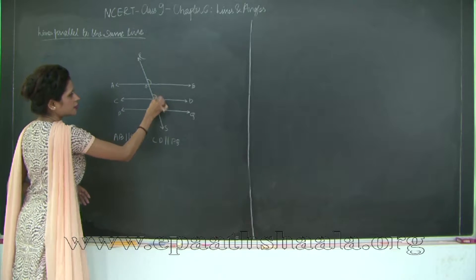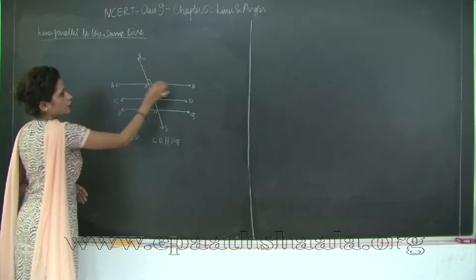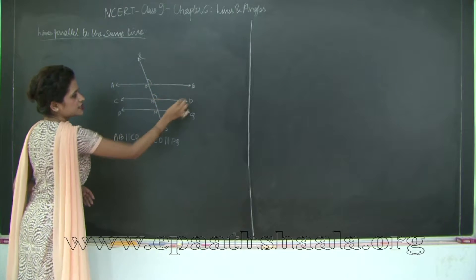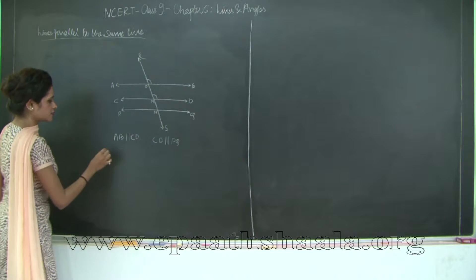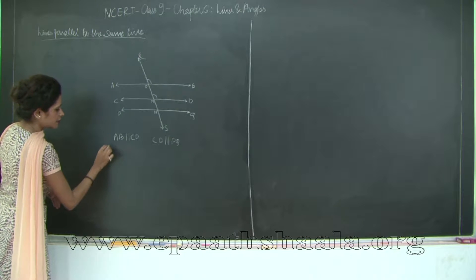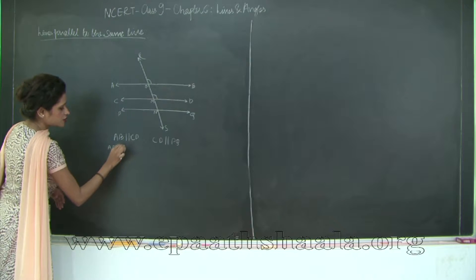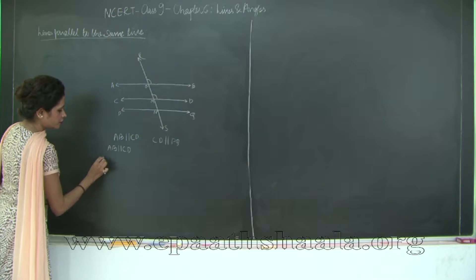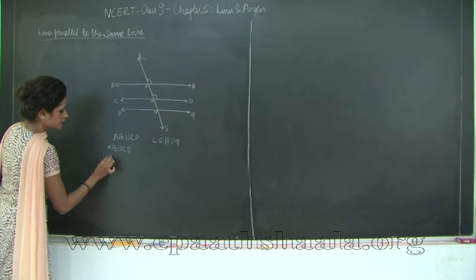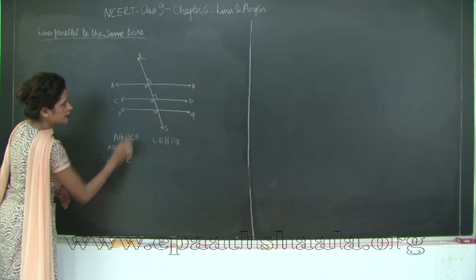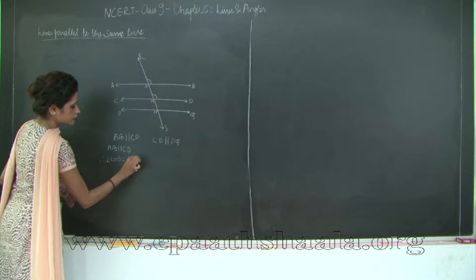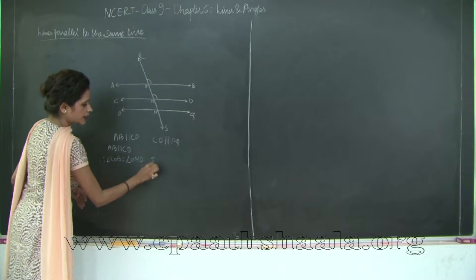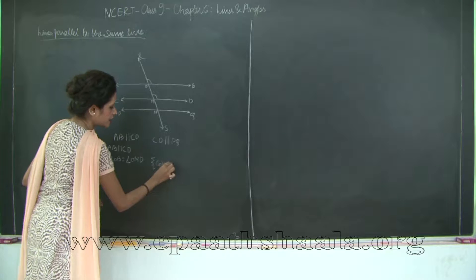Since AB is parallel to CD, I have angle ROB equal to angle OMD. Why? Because they are corresponding angles. So I am going to say AB is parallel to CD, therefore angle ROB is equal to angle OMD. They are corresponding angles of parallel lines.